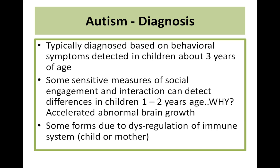Regarding diagnosis, most children are typically diagnosed based on the detection of behavioral symptoms at about three years of age. There might be some sensitive measures of social engagement and interaction which can detect differences in children one to two years of age, because of accelerated abnormal brain growth at this time. However, there might be some forms which are due to dysregulation of the immune system, either in the child or in the mother, and these forms usually need laboratory investigations.